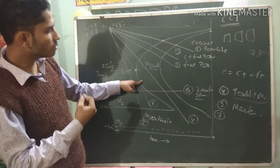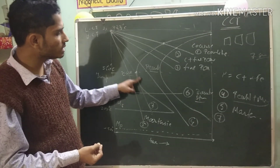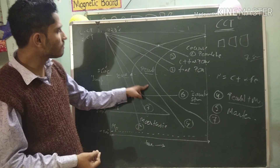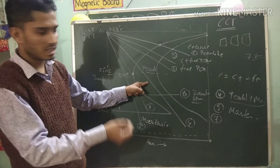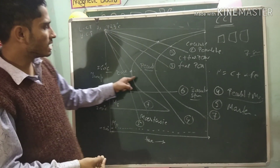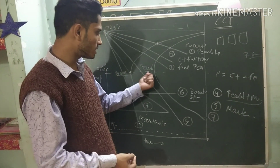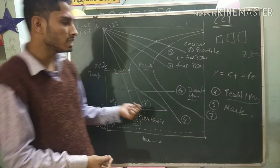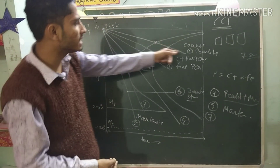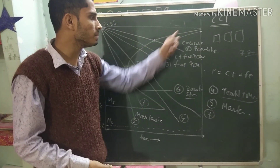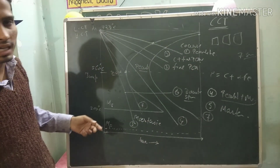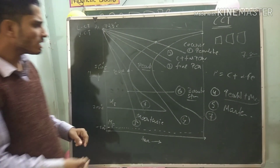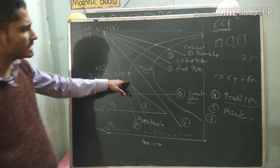And if the cooling rate is even slower, it will become coarse pearlite mixture. So depending on the cooling rate — very very slow to drastic — we get different microstructures.